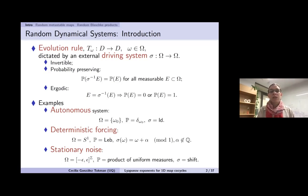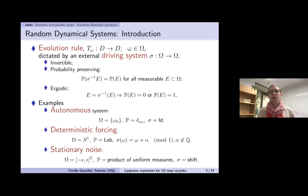We try to keep the restrictions on this driving minimal, to allow things like seasonal forcing or noise. The conditions we impose are invertibility, measure preserving, and ergodicity only — so no mixing assumptions. That allows us to handle quite general examples: we recover the autonomous case, deterministic forcing such as quasi-periodic forcing, and also noise such as IID noise at each step.